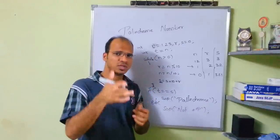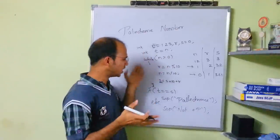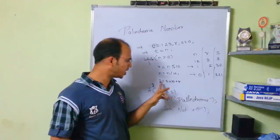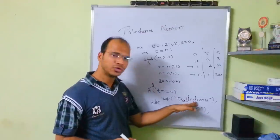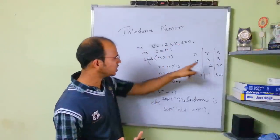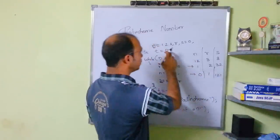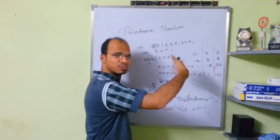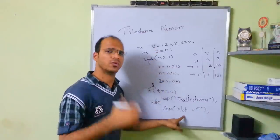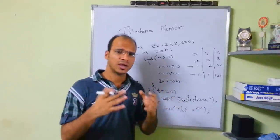To summarize: first reverse the number, then compare the original (t) with the reversed (s). If they are equal, it's a palindrome. For example, 121 reversed is 121, so it's a palindrome. For 123, reversed is 321, which is different — not a palindrome. The reversal logic applies generally; the palindrome check just adds the comparison step.